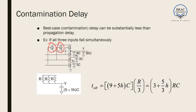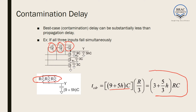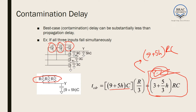In the best-case scenario, all 3 MOSFETs are switched on, so 3 resistances in parallel give R/3. The total delay would be (9 + 5H)·C · (R/3), which simplifies to (3 + 5H/3)·RC. This is much less compared to the worst-case delay of (9 + 5H)·RC. So in the best-case or contamination scenario, the delay is significantly lower than in the worst-case scenario.